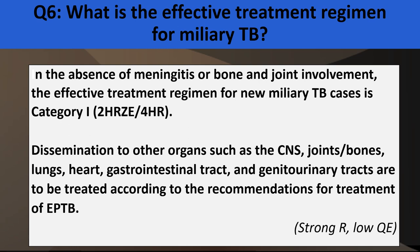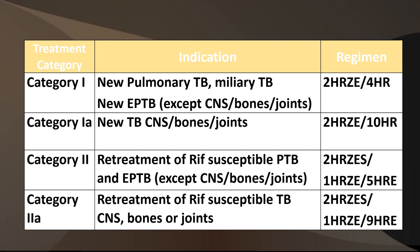For military TB, in the absence of meningitis or bone and joint involvement, effective treatment uses Category 1. Dissemination to other organs is treated according to recommendations for extra-pulmonary tuberculosis. Category 1 is new pulmonary TB or miliary TB; Category 1A is new TB with CNS, bones, or joints involvement. Category 2B would be retreatment or rifampicin-susceptible PTB and EPTB; Category 2A is rifampicin-susceptible TB with CNS, bones, or joints involvement, with the following treatment regimens recommended.